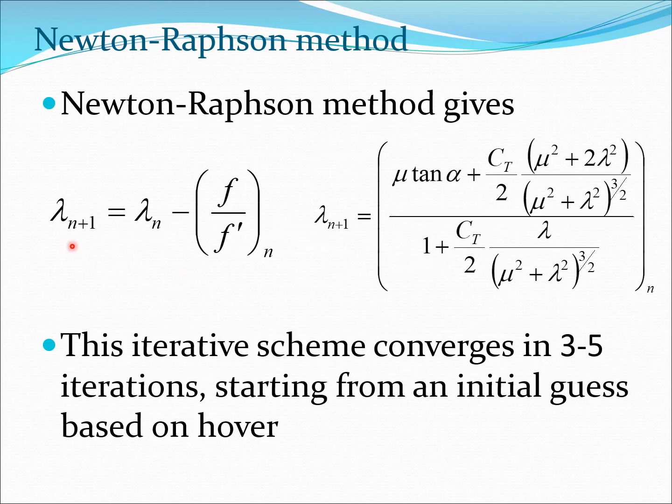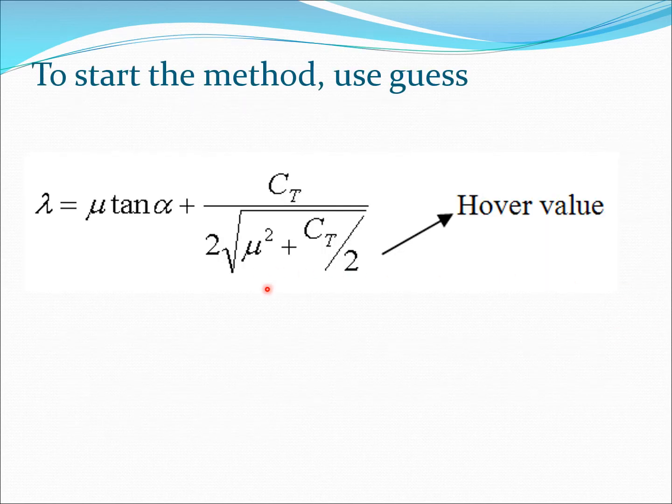The Newton-Raphson method essentially says that lambda n plus 1 is lambda n minus f by f dash at the nth point. This equation can be obtained by doing some differentiations. You can use this equation to update lambda and this will essentially converge in a small number of iterations. You need to start from a good initial guess and one of the advantages is we have a good initial guess here, the hover condition. Essentially, you can go back to the equation for lambda and substitute here for lambda squared. That would be Ct by 2, and from this equation, you can obtain a pretty good guess for the lambda value in forward flight.